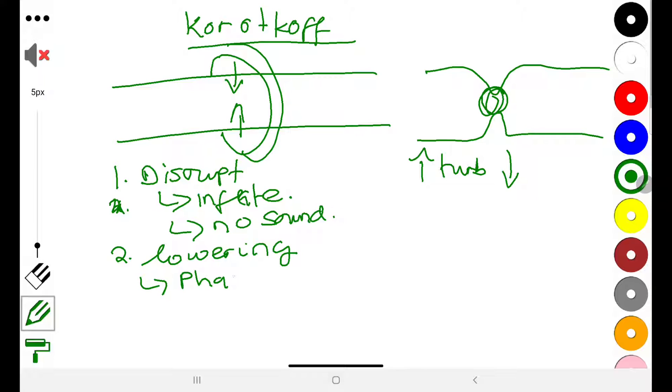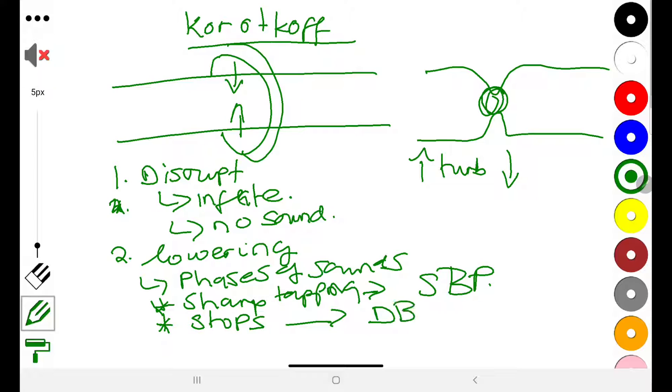You're going to go through phases of sounds. The phases of sounds are: first of all you're going to hear a sharp tapping noise as the blood starts to whoosh back into the artery. And then the reading on the cuff at this point is usually equal to systolic blood pressure. And then at the point where the sound sort of stopped, that is the one that is recorded as diastolic blood pressure.